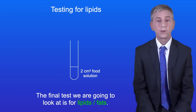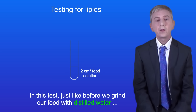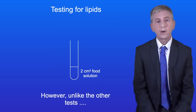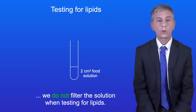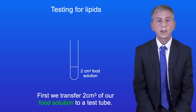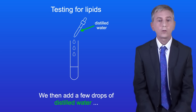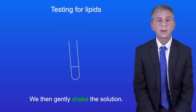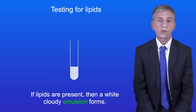The final test we're going to look at is for lipids or fats. In this test, just like before, we grind our food with distilled water using a mortar and pestle. However, unlike the other tests, we do not filter the solution when testing for lipids, because lipid molecules can stick to filter paper. We transfer 2cm³ of our food solution to a test tube. We then add a few drops of distilled water and a few drops of ethanol and gently shake this solution. If lipids are present, then a white cloudy emulsion forms.